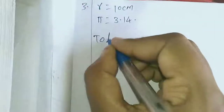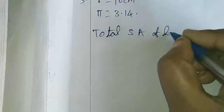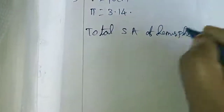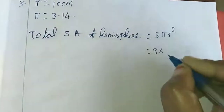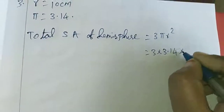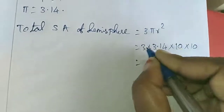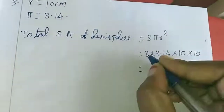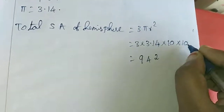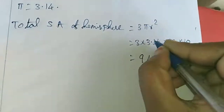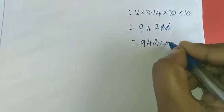Total surface area of hemisphere: formula is 3πr². So 3 × 3.14 × 10 × 10. Multiplying: 3 × 3.14 = 9.42, then × 100. The answer is 942 centimeters square.